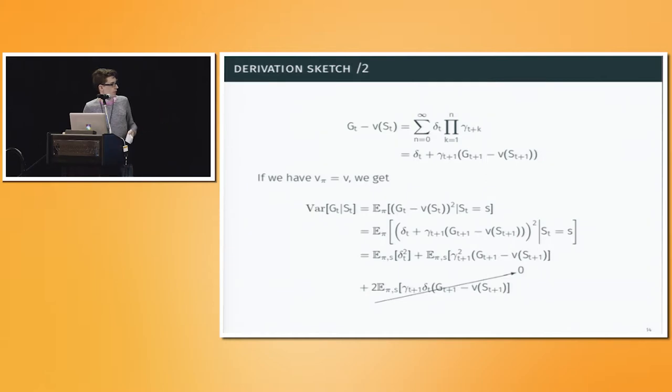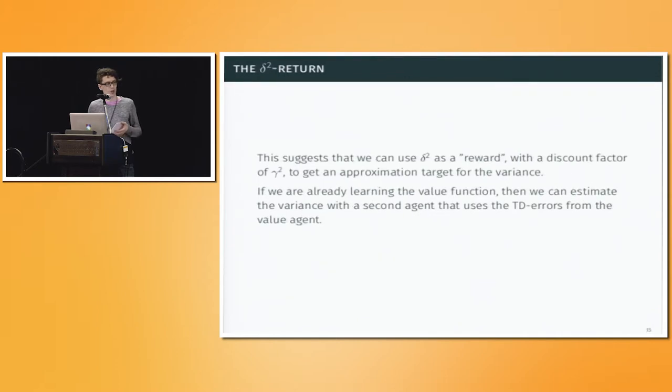You get delta T plus the discounted value of the return starting from the next state minus the value starting from the next state, all of this squared. You can separate it out. You get a nice, almost Bellman equation-like thing, except for the fact that there's a bunch of these cross terms. But as we explain in our paper, there's reasons for believing that those will cancel out.